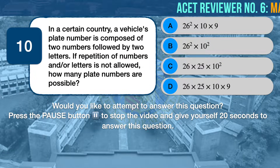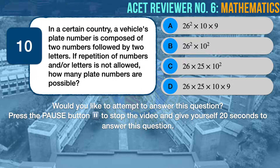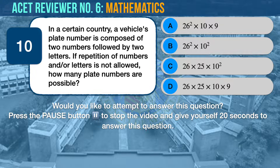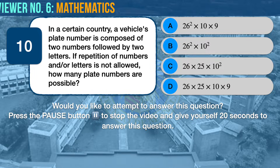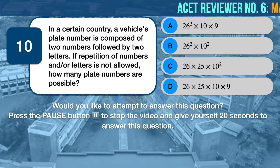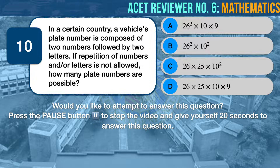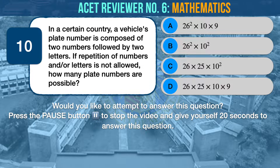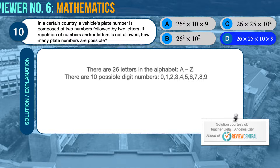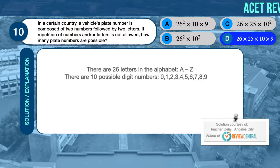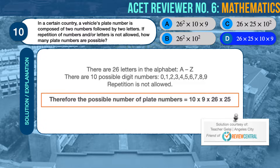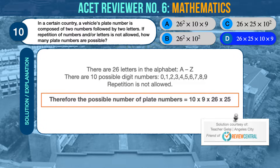Math question number 10. In a certain country, a vehicle's plate number is composed of two numbers followed by two letters. If repetition of numbers and/or letters is not allowed, how many plate numbers are possible? A, 26 squared times 10 times 9; B, 26 squared times 10 squared; C, 26 times 25 times 10 squared; D, 26 times 25 times 10 times 9. The correct answer is D. There are 26 letters in the alphabet, A to Z. There are 10 possible digit numbers, 0 to 9. Since repetition is not allowed, the possible number of plate numbers should be equal to 10 times 9 times 26 times 25.